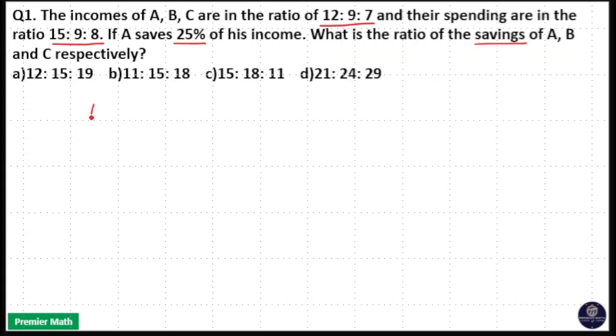We have three persons A, B, C. Their income are in the ratio 12 is to 9 is to 7. Their expenditure are in the ratio 15 is to 9 is to 8. Savings is equal to income minus expenditure.